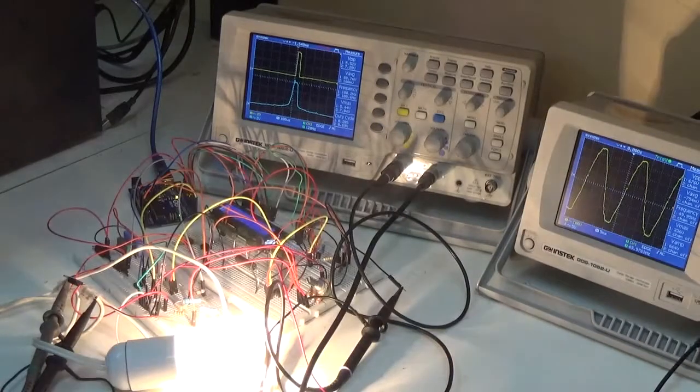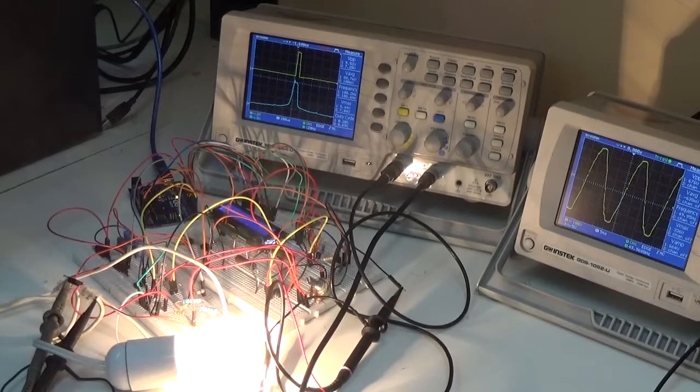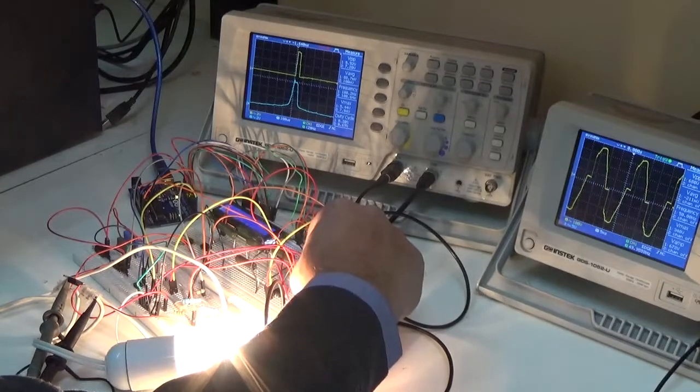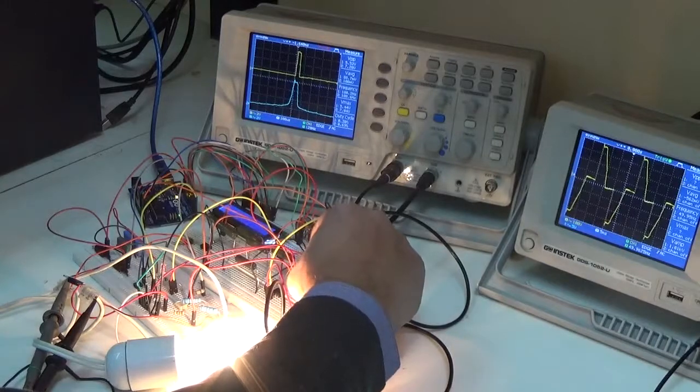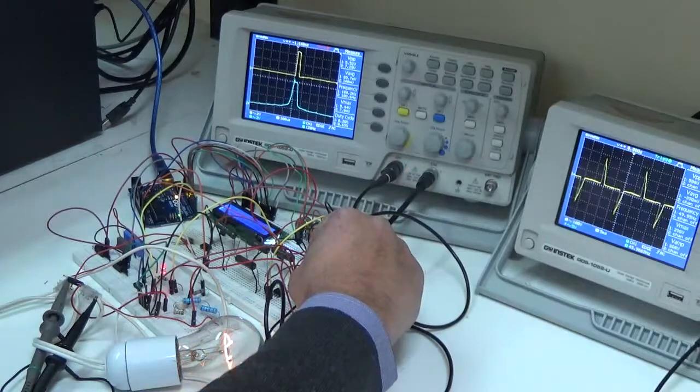Again, we can reduce by increasing the firing angle and reduce the output RMS voltage across the load. By doing so, we can also change the output voltage waveform, as you can see here.